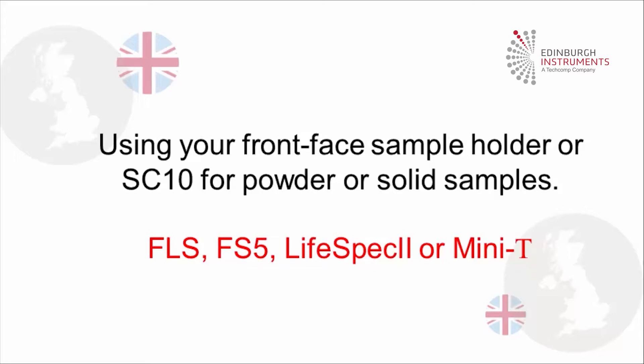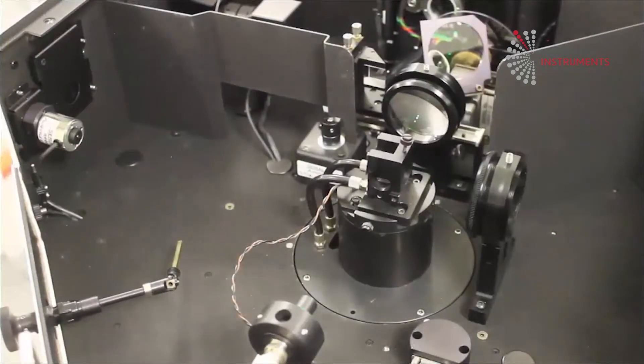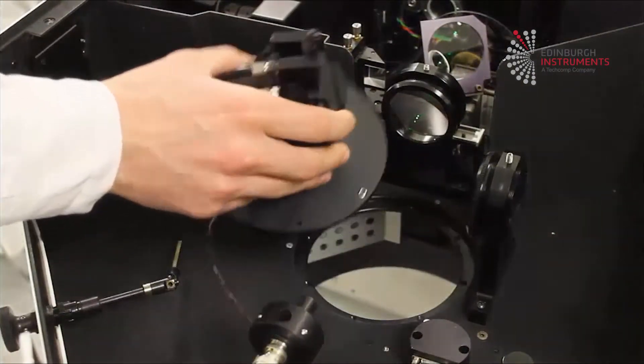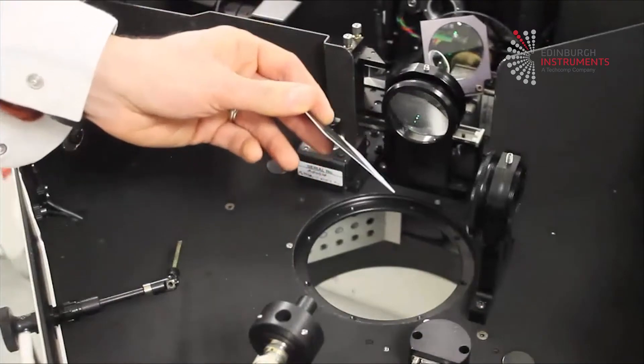Using your front face sample holder on a spectrometer requires more consideration than the liquid sample holder. These considerations can be split into two main areas: sample alignment or geometry, and stray light. The key point to alignment is that the user must move the solid sample plane to meet the intersection or alignment point of the emission and excitation optical axes.